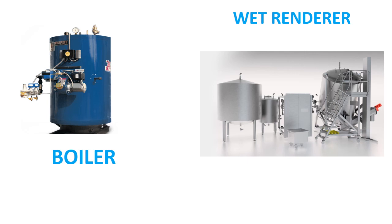Here we can see the wet rendering setup: a big vertical cylindrical cooking chamber with a large loading hole at the top, a conical bottom with a large unloading opening, and valves above for separating liquids like water and oil. On the left side we can see a modern electrically operated boiler that is the source of steam, used for all kinds of processing in either wet or dry rendering.